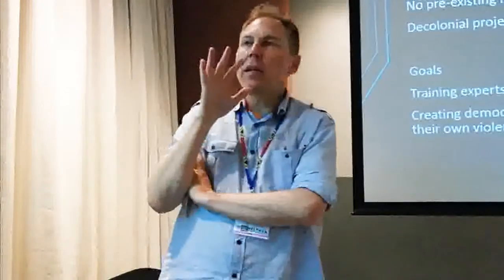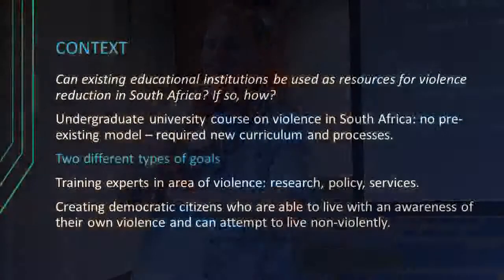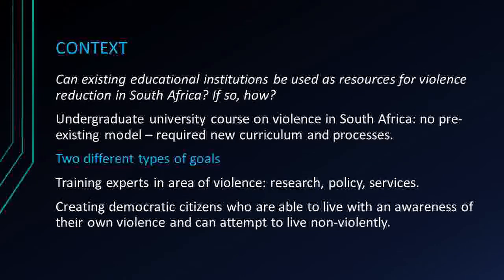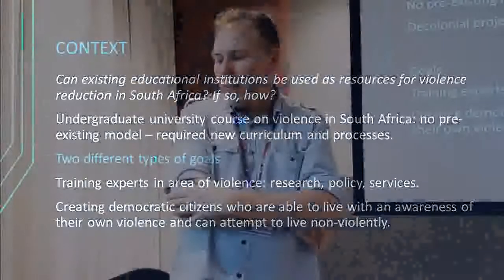Now, immediately offering the idea of violence, the question asked from the managerial perspective of the university is: what are the outcomes? And often those outcomes are thought of in terms of employability. So the answer was framed in terms of creating expertise — we need research on violence, on the causes of violence, on violence prevention, on policy, on better social services.